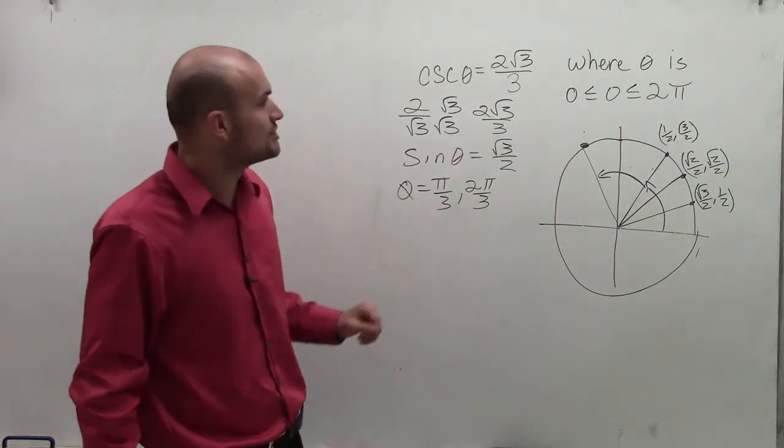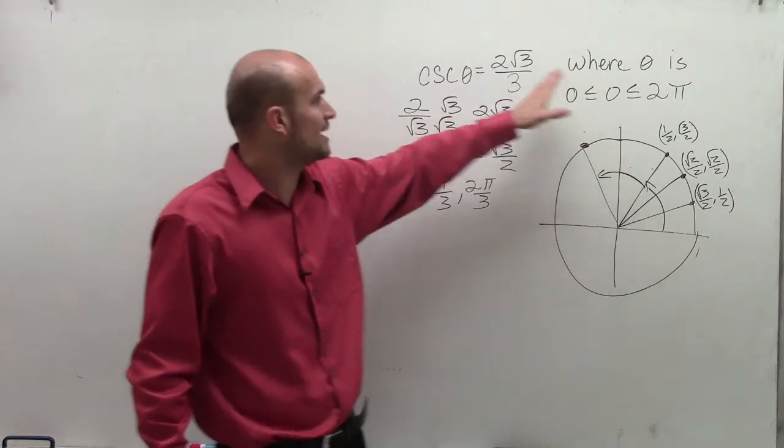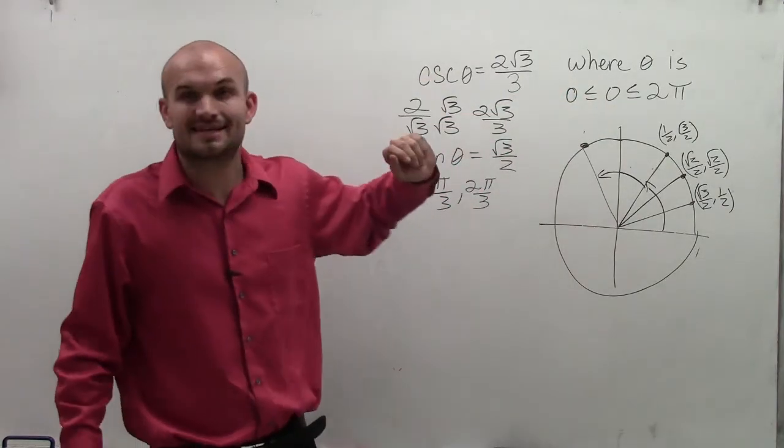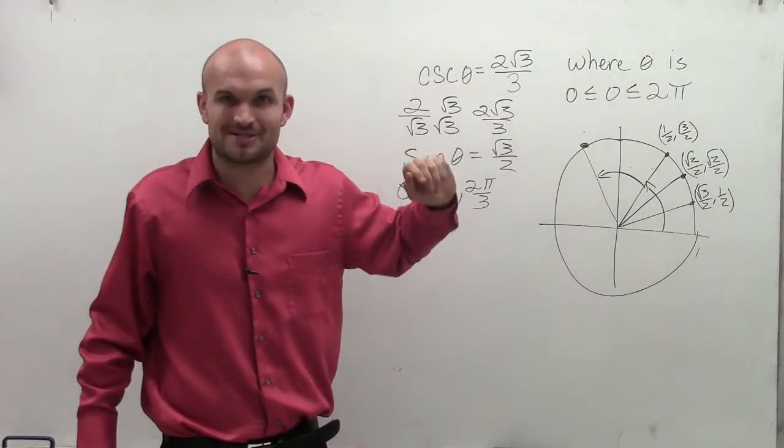So there you go, ladies and gentlemen. Those are your 2 theta between 0 and 2 pi, where your cosecant of theta is equal to 2 radical 3 divided by 3. Thanks.